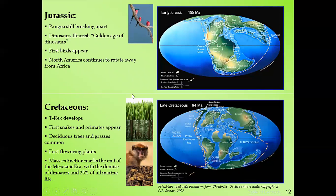During the Cretaceous period under the Mesozoic, the T-Rex developed. The first snakes and primates appeared. Trees and grass became common, and the first flowering plants appeared during the Cretaceous period.